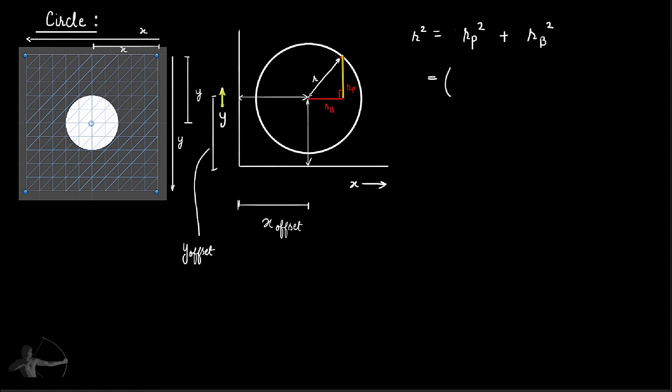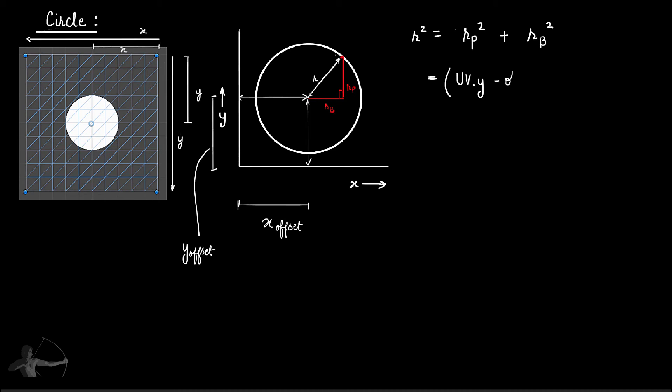So what is R_P? R_P is in Y axis line. So it will become (UV.Y minus offset.Y) squared plus R_B is in the X axis so (UV.X minus offset.X) squared. Instead of offset you can also call it center so that when we pass center X and Y our shader would know where to draw the circle from. So you can also translate this equation equals to radius squared.